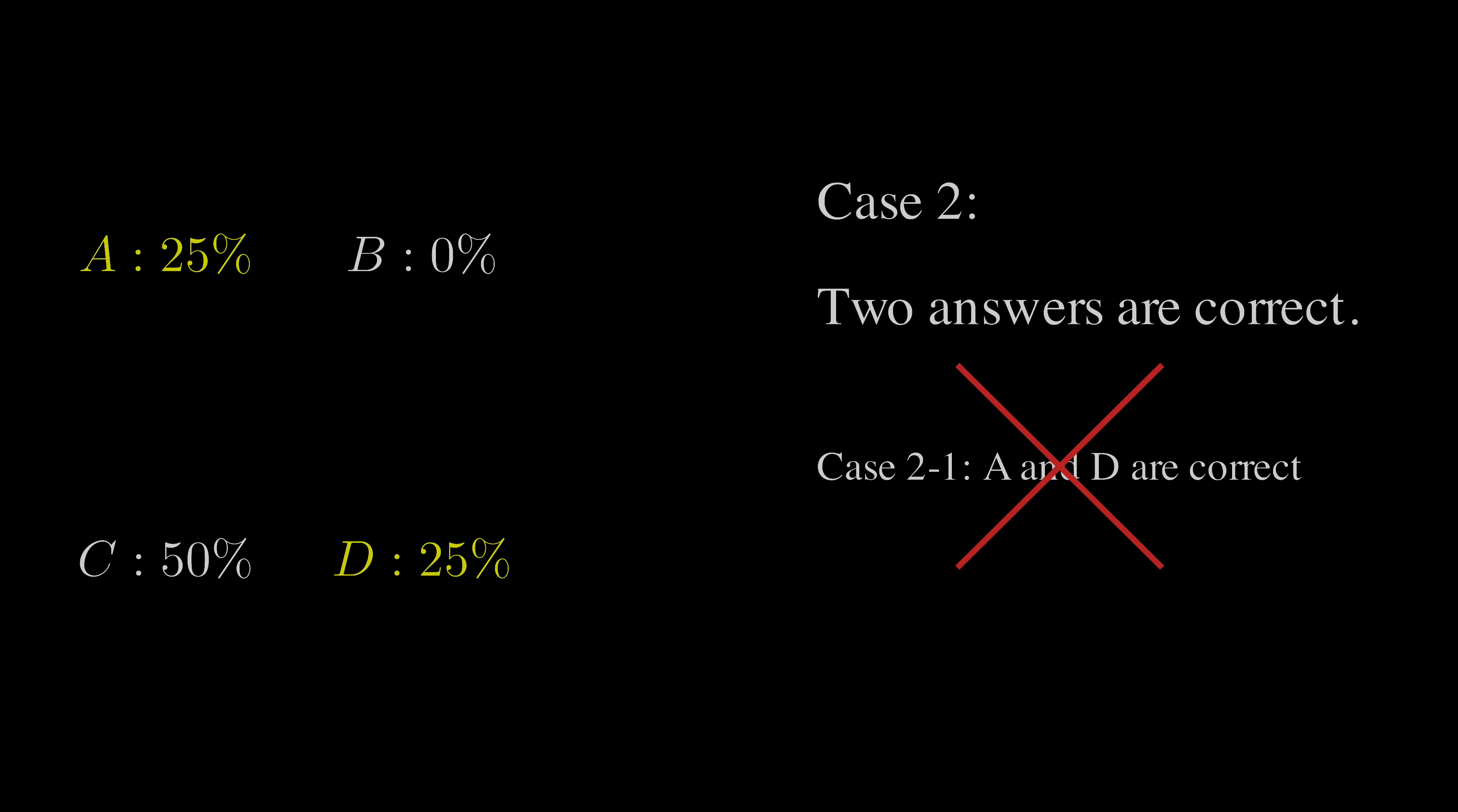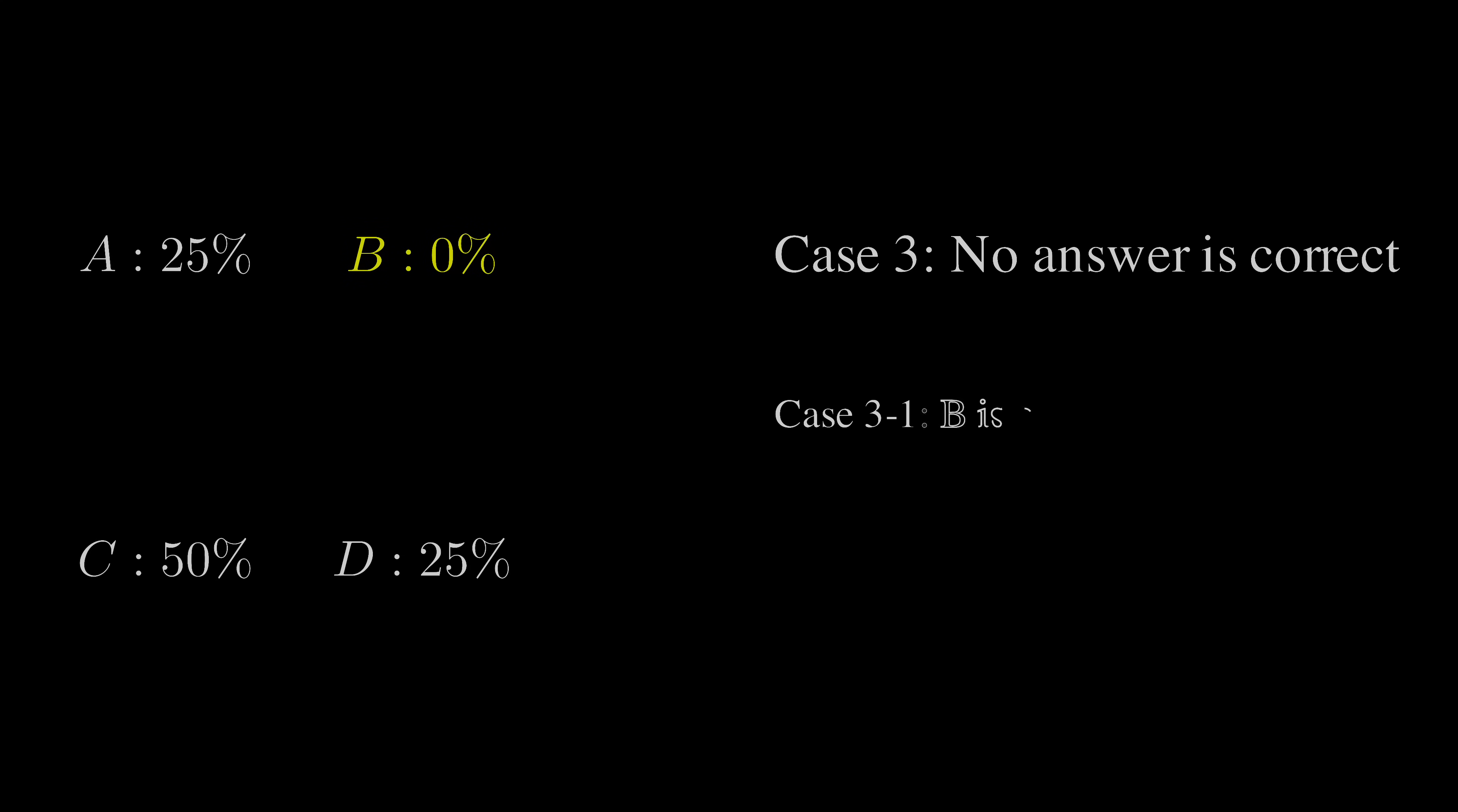The only case left is to say that none of the answers is correct. But if none of the answers is correct, and you randomly pick B with a 25% chance, then you are correct. We have a self-contradiction again.